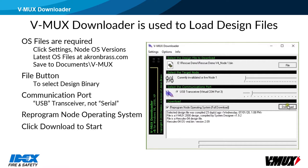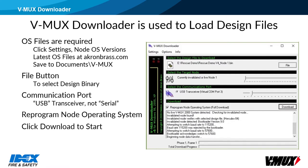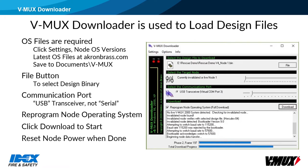Click Download to start. Downloader will verify that the design file matches the node type — a Hercules node in this case. Downloader will try to find node 1 or an invalidated node. The download speed will be adjusted to the fastest allowable speed for that node type, and the download will begin. There are progress bars at the bottom of the window. This video is sped up to save time. Once the download is done, reset power to all nodes in the network. After reset, the node's status light should show a steady heartbeat flash.